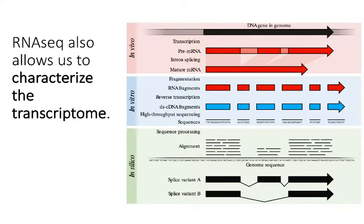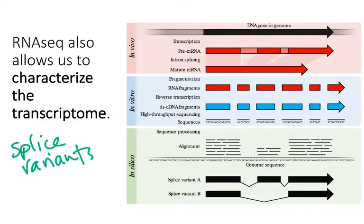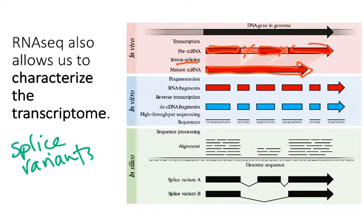Another piece of information that RNA-seq can give us is the ability to characterize the transcriptome, specifically to provide information about splice variants. This is something the genome cannot give us — only RNA-seq transcriptome data can. As a quick refresher on splicing: we have our mature mRNA, which was constructed from a pre-mRNA where introns were cut out, keeping only the exon regions to make the mature mRNA.